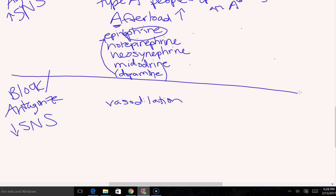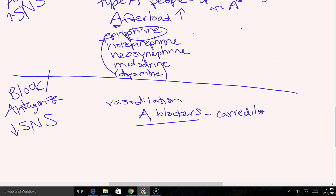There are two types of drugs that cause vasodilation via alpha blockade. One is an alpha-1 blocker — examples are carvedilol and labetalol. The next video in this series will cover beta blockers. You might recognize that the "-lol" suffix indicates beta blockers, and that's true — those drugs are primarily beta blockers, but they are actually alpha-1, beta-1, and beta-2 blockers, so being alpha-1 blockers they also cause vasodilation.